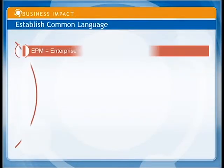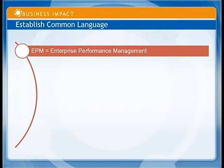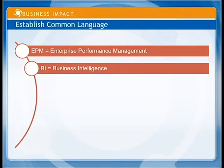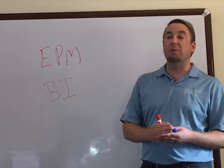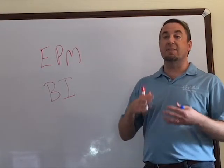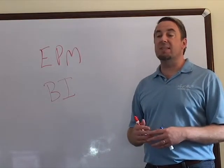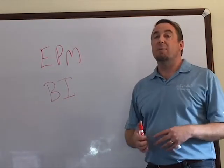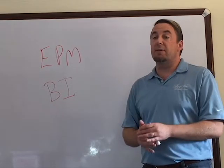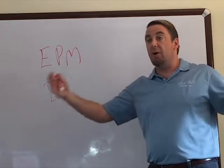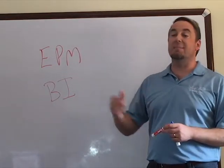EPM stands for Enterprise Performance Management. It's really Ross's version of BI — business intelligence. BI can mean anything from reports to ad hoc analysis, dashboards, drill-throughs, and alerting. It's not just about one particular area like sales reporting — it's across your enterprise, which is why they named it Enterprise Performance Management.